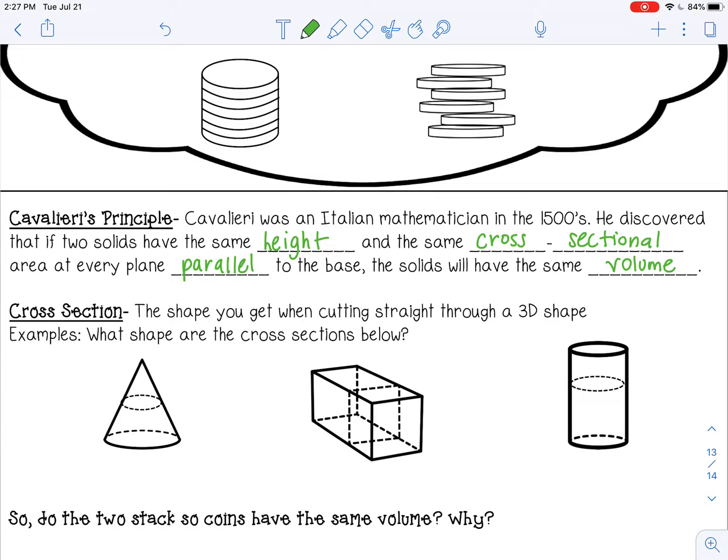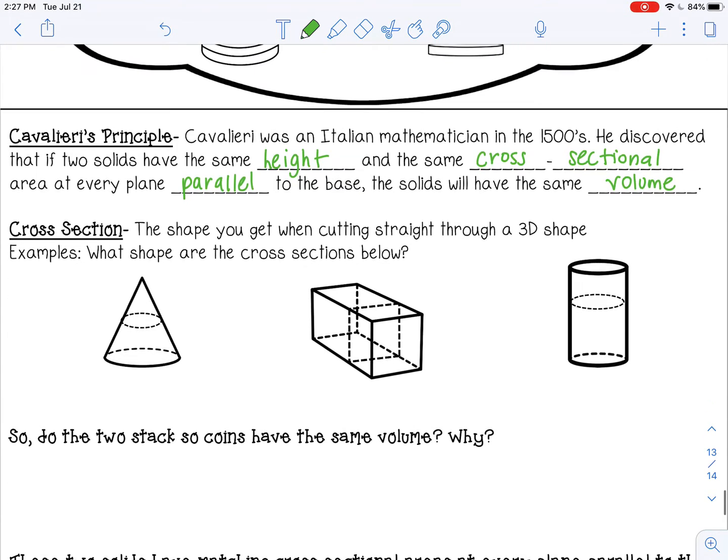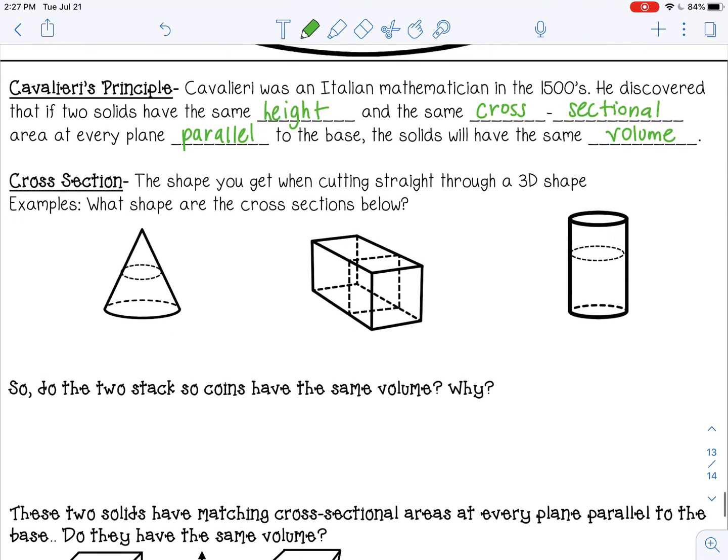So what in the world does that mean? Well, they have the same height. That's easy. Two shapes that have the same height, but cross-sectional area. Let's talk about that.